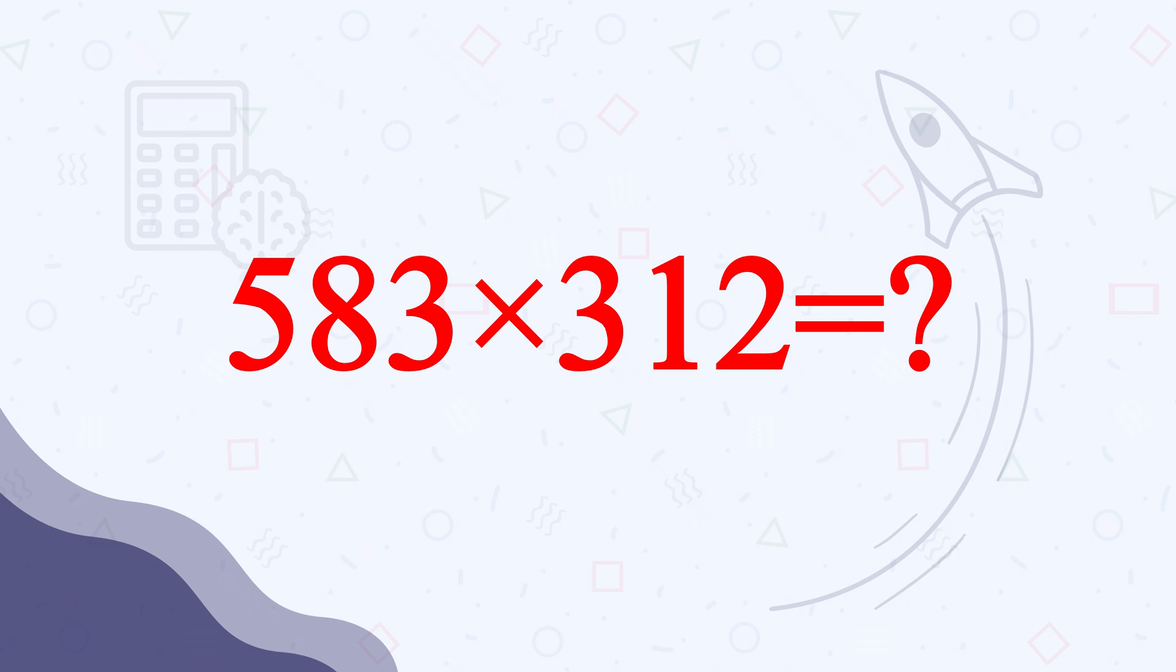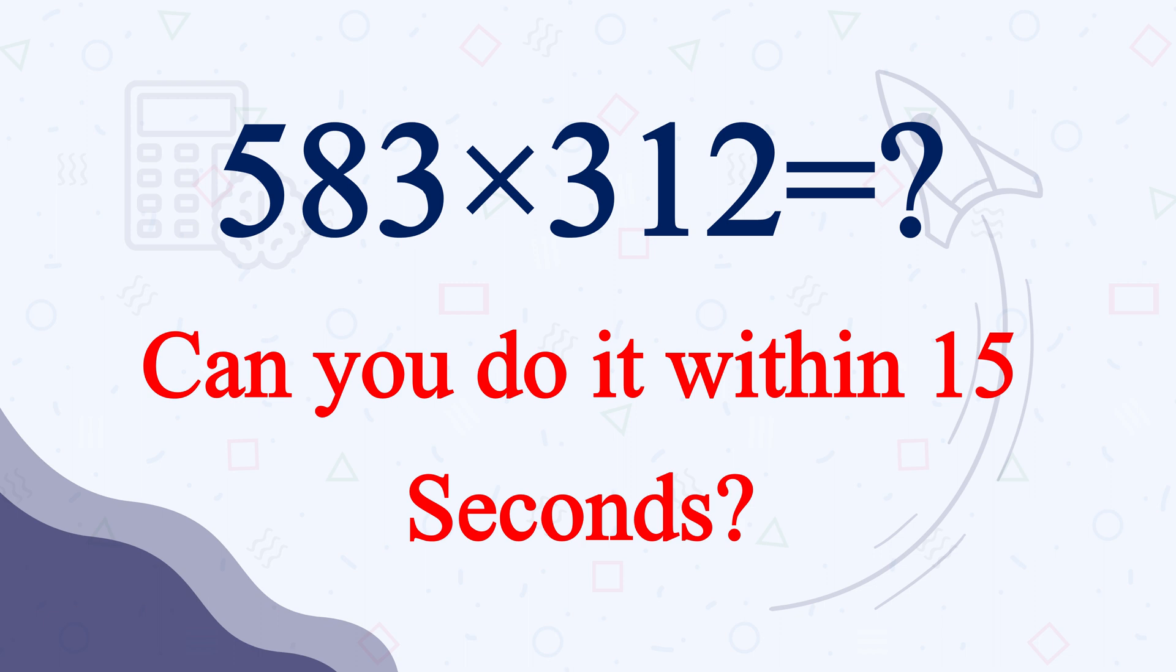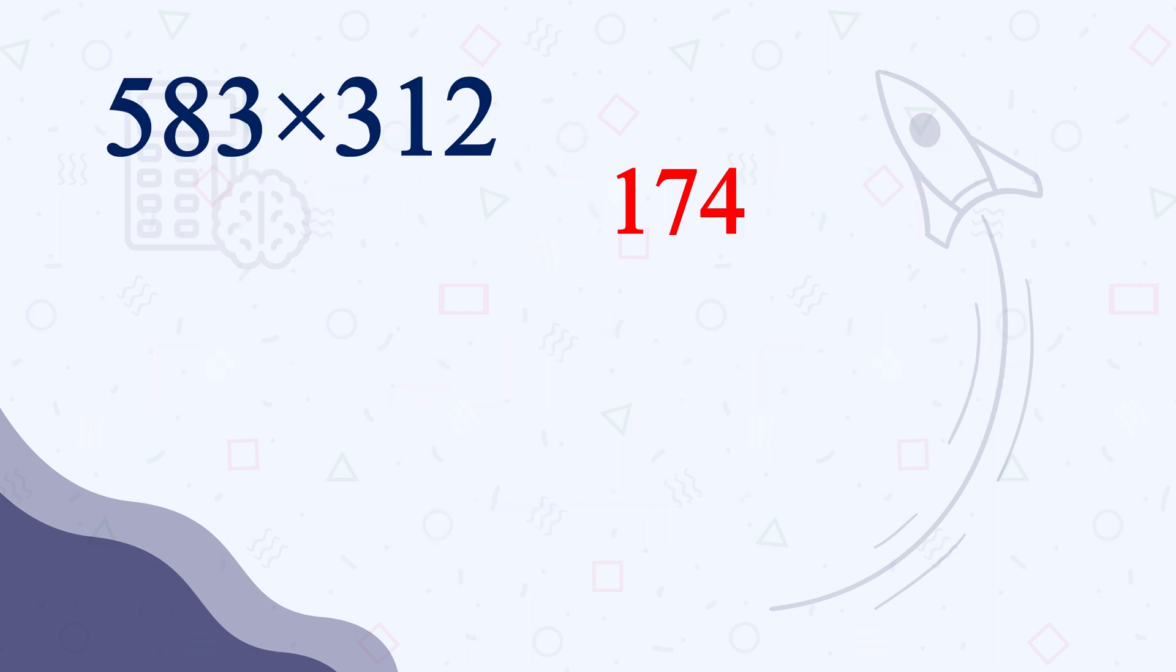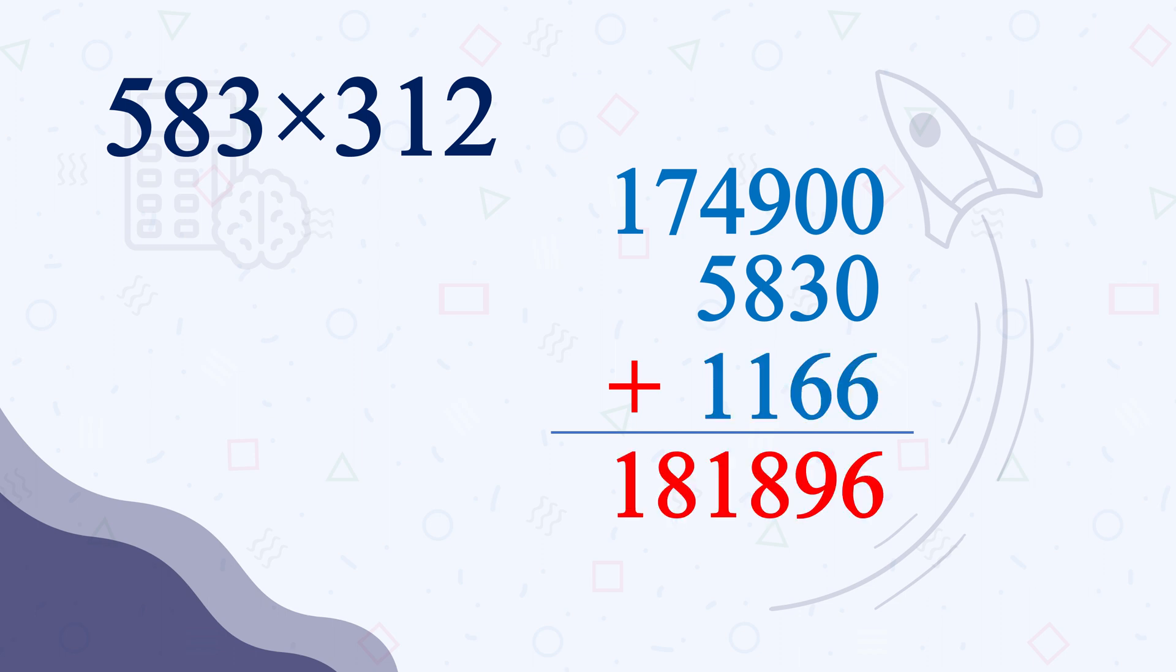What is 583 times 312? Can you do it within 15 seconds? It is 174900 plus 5830 plus 1166 which equals 181896. Let me tell you how I am doing it so fast.